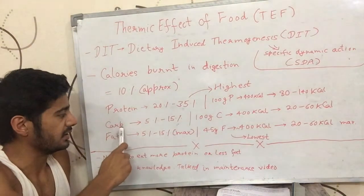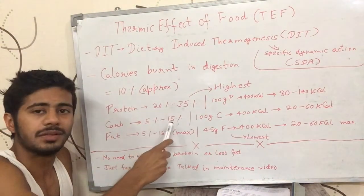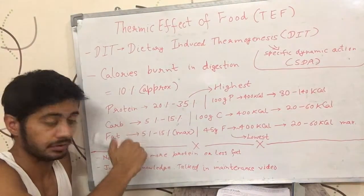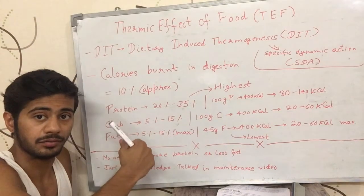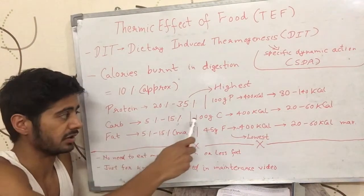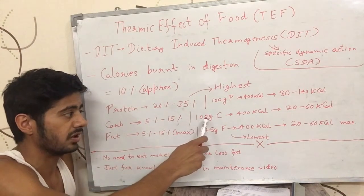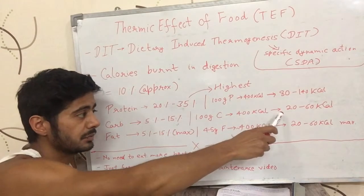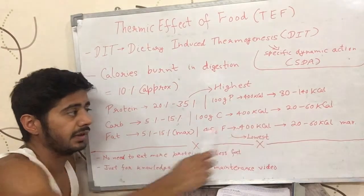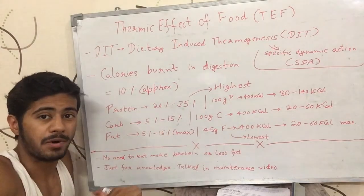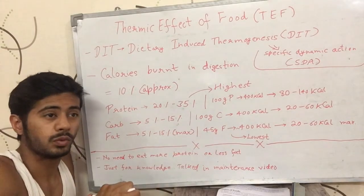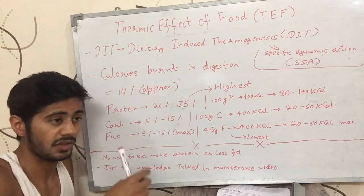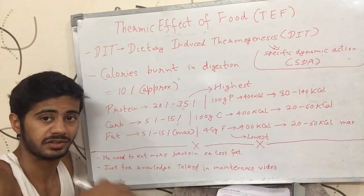Second is the case of carbohydrates. It takes 5 to 15% of the calories from carbohydrates to digest them. So 100 grams of carbohydrates having 400 kilocalories will burn off 20 to 60 calories just to digest itself.